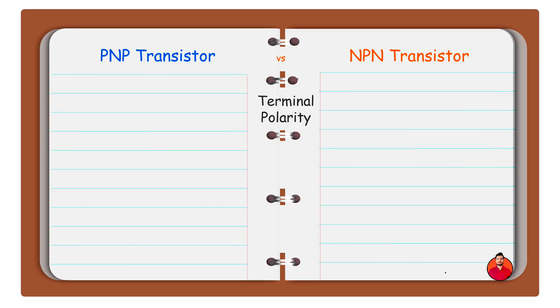In PNP transistor, emitter is positive, base is negative and collector terminal is negative.